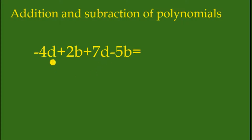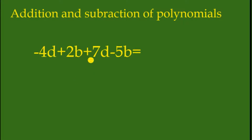Negative 4d and positive 7d have opposite signs, so this is subtraction. Negative 4d and positive 7d is equal to positive 3d.